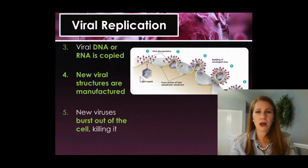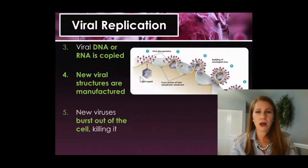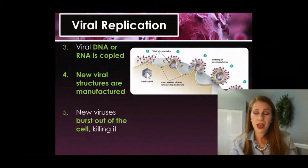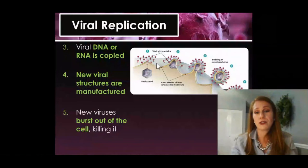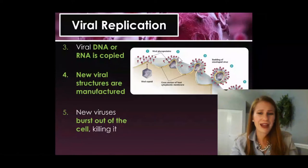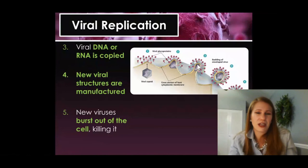This is the reason we have the envelope on the outside of the virus. We have a brand new virus here, just freshly made by your cell. As it's trying to leave, it's going to come into contact with your cell membrane. On your cell membrane are your own glycoproteins. So it's going to take that cell membrane and glycoproteins and use it as its little shield almost. It's like cellular camouflage.